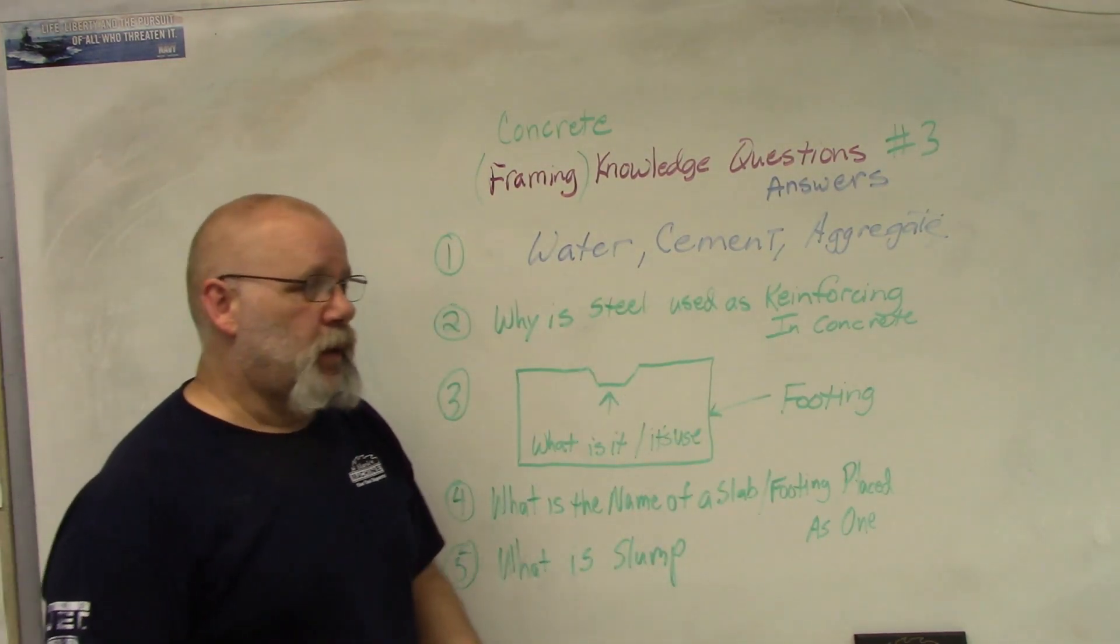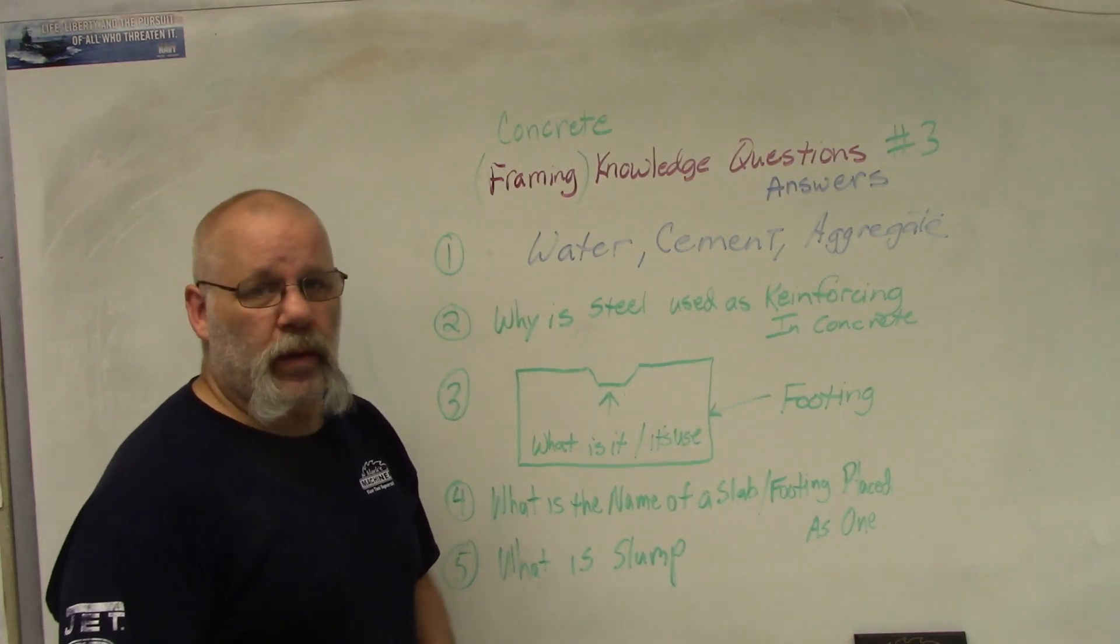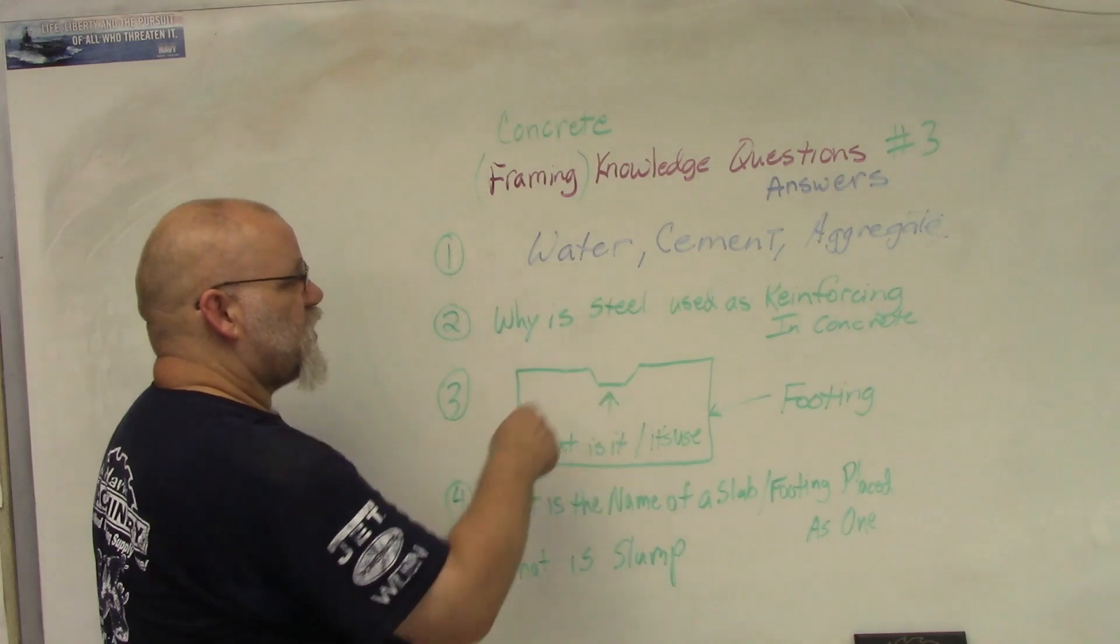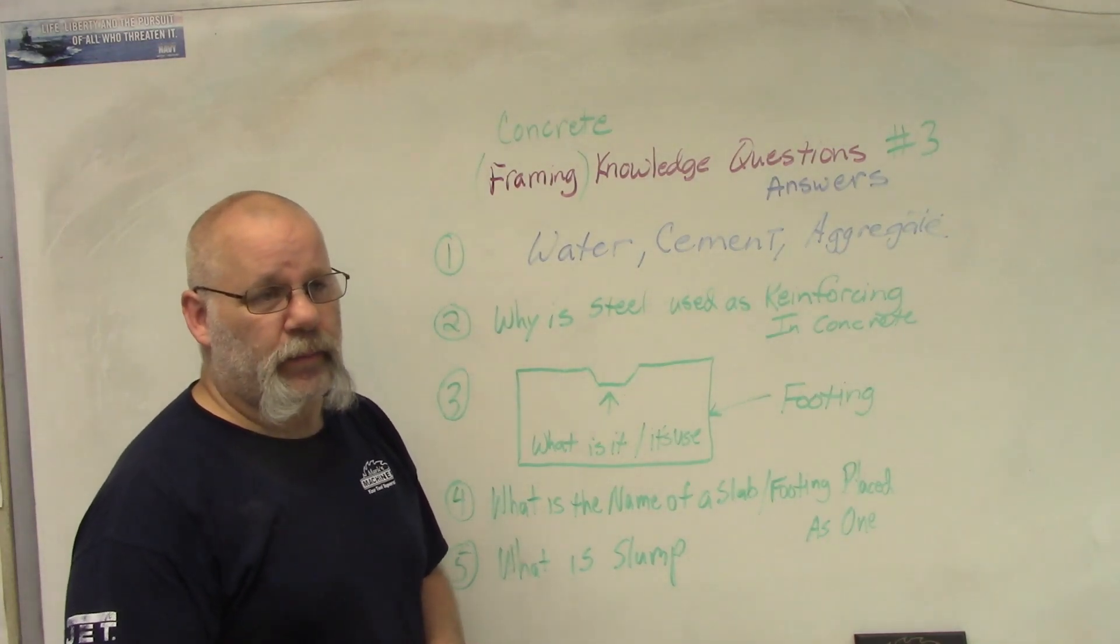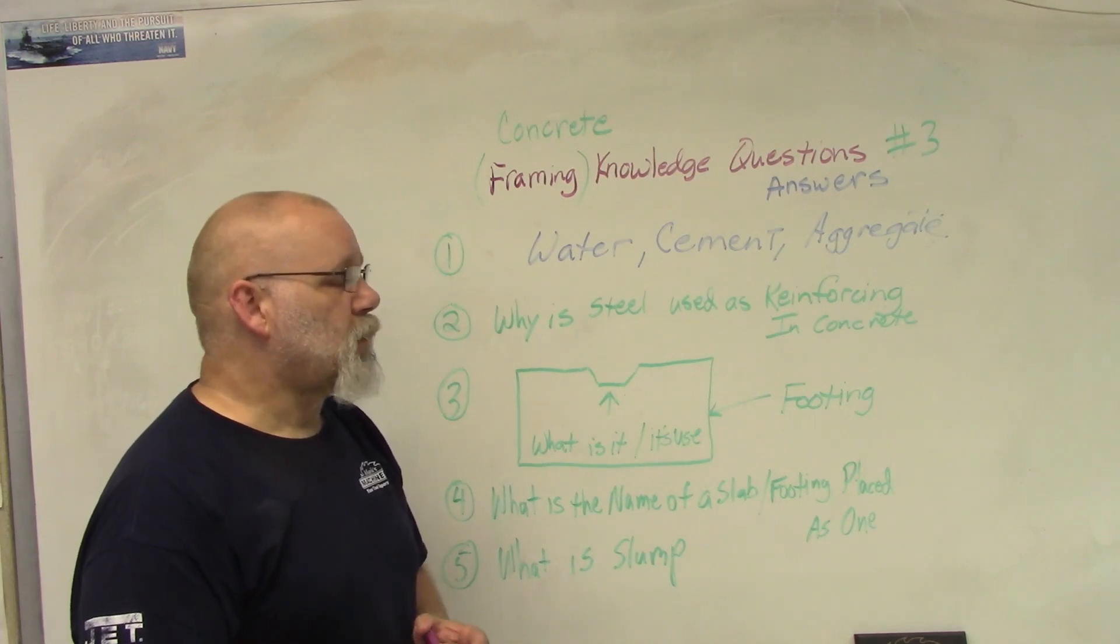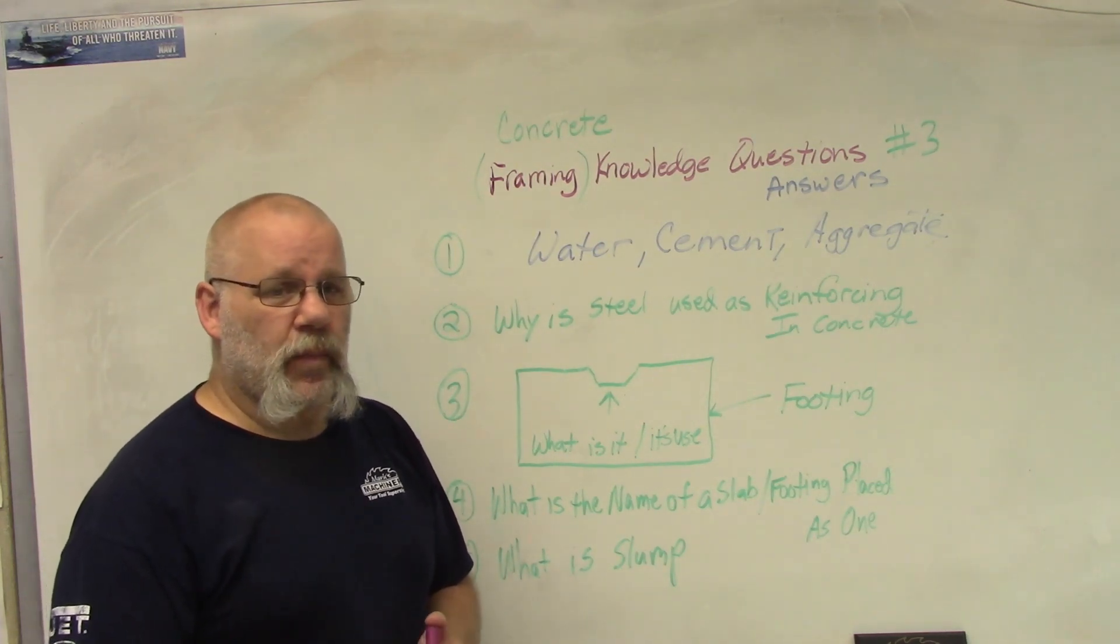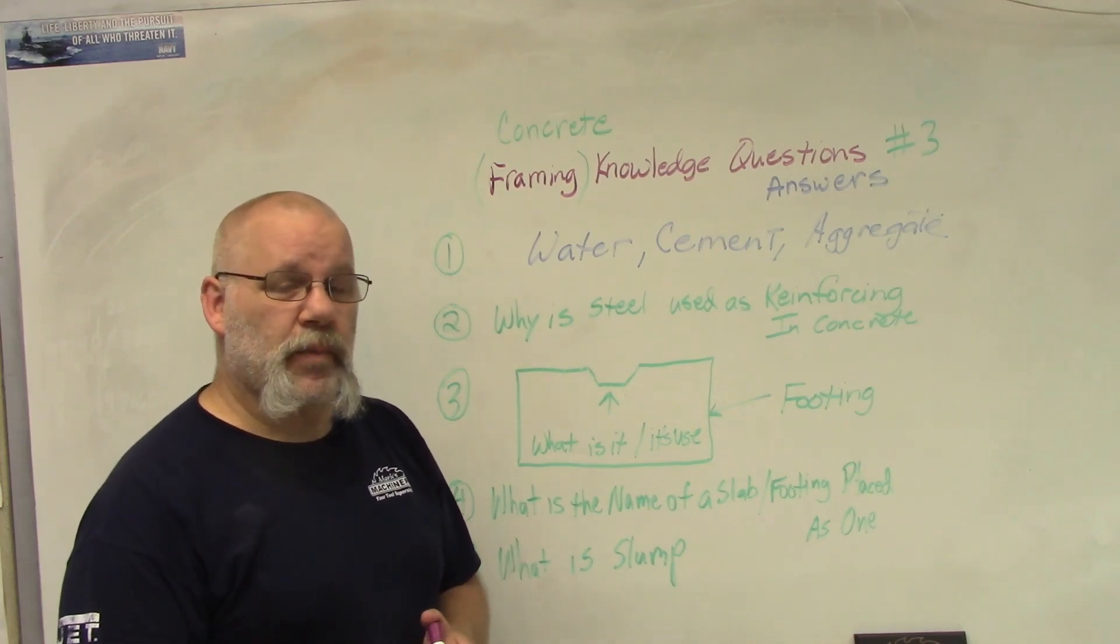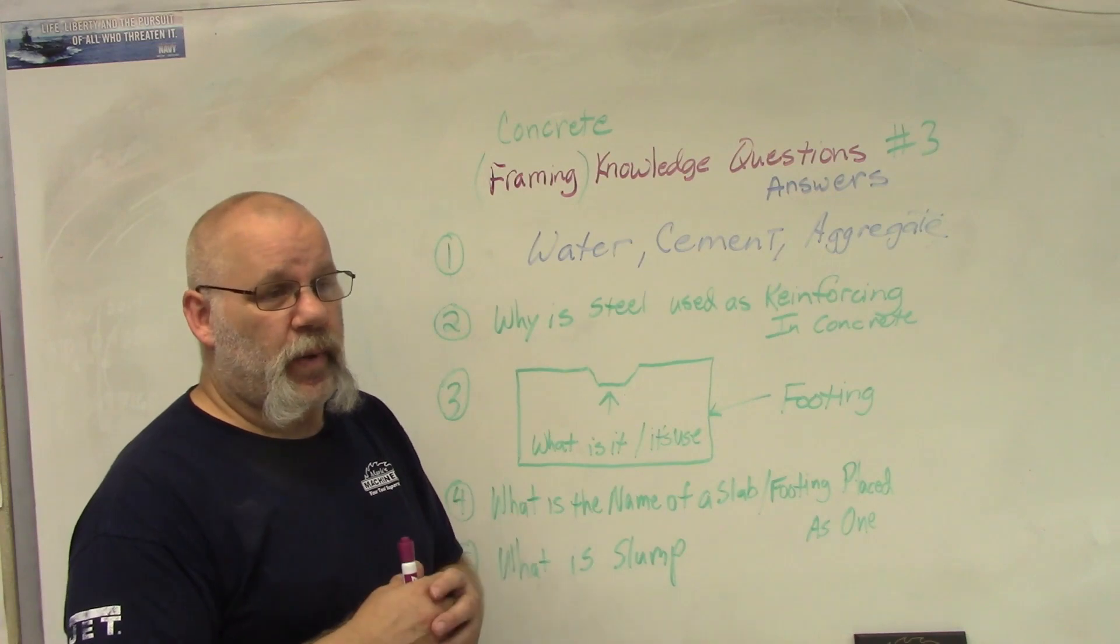Number two: why is steel used as reinforcing in concrete? Well, there's a lot of reasons why steel is used in concrete. It's relatively cheap, it's strong, but the main thing is because concrete and steel have the same coefficient of expansion. What does that mean? Well, everything expands and contracts - it either shrinks or expands depending on the weather.